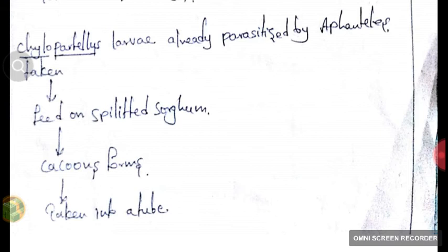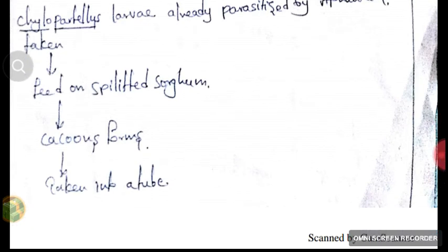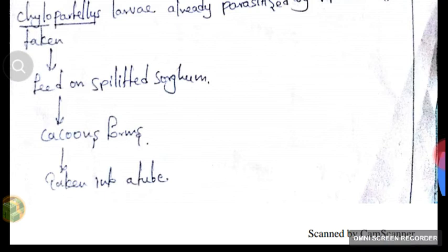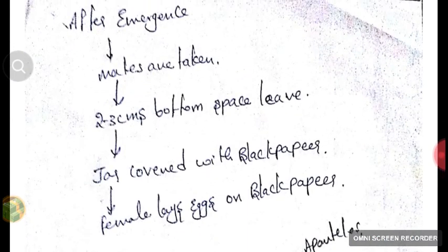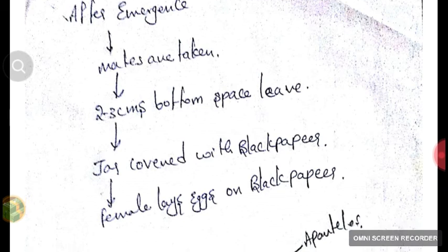The Chylopateles is parasitized by Apantheles flavipes. We will split the sorghum stems, place the Chylopateles on the sorghum stem, and Chylopateles feeds on the sorghum so that Apantheles flavipes within Chylopateles also gets fed. We will extract the cocoons into a tube and wait a few days. After emergence of adults, we will take the mating pairs — one male and one female — and place them in a jar. Two to three centimeters of the bottom of the jar are left empty, and the entire jar is covered with a cloth or black pepper material.